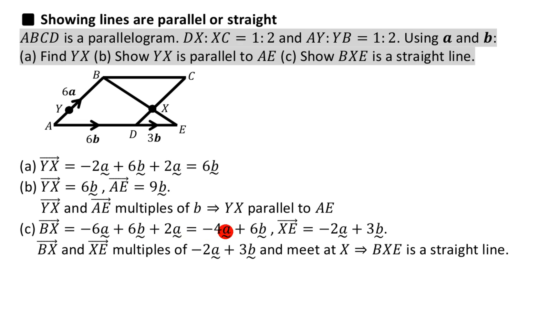So BX - I'm just going to jump to this - is equal to minus 4a plus 6b. And we work out XE, the other bit of this long line.